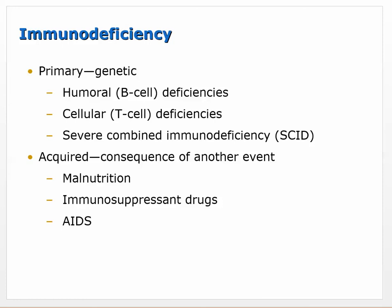Now moving on to immunodeficiency - where the immune system isn't doing what it was supposed to do. There are a couple of categories: primary, which just sort of happens genetically; and it could be humoral...